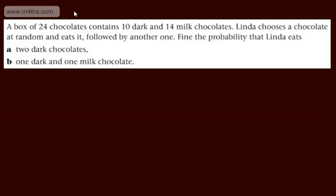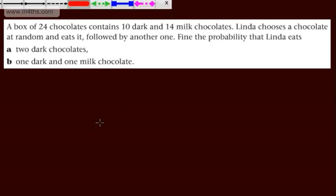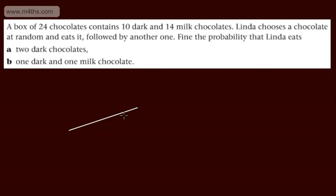A box of 24 chocolates contains 10 dark and 14 milk chocolates. Linda chooses a chocolate at random and eats it, followed by another one. Find the probability that Linda eats A, two dark chocolates, B, one dark chocolate and one milk chocolate. So let's get a tree diagram. We can do pick 1 and pick 2. So let's have pick 1 here, and then we'll branch off with pick 2.